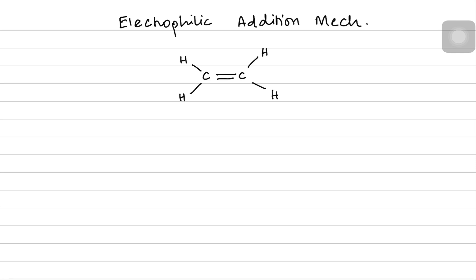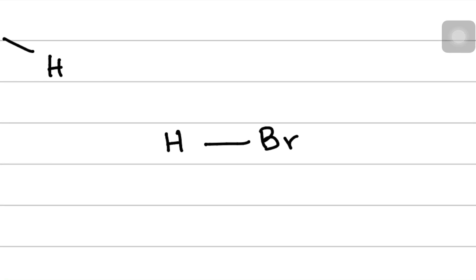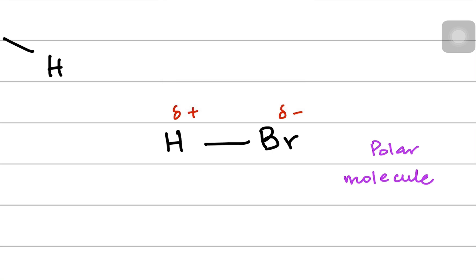Now imagine another molecule in the surroundings: hydrogen bromide, HBr. We should know that HBr has partial positive and negative charges because it is a polar molecule. It is polar because bromine atoms are more electronegative, which is why hydrogen bromide is a polar compound.